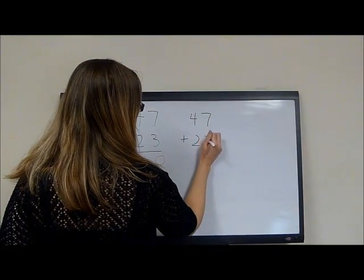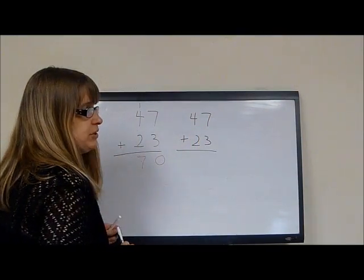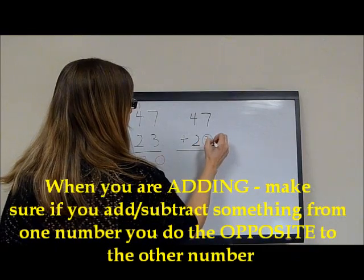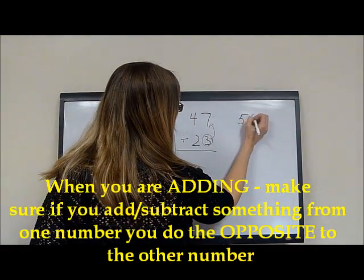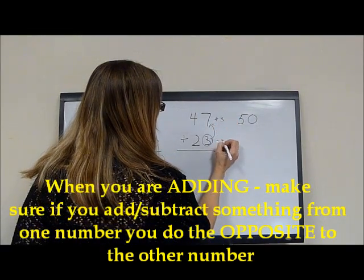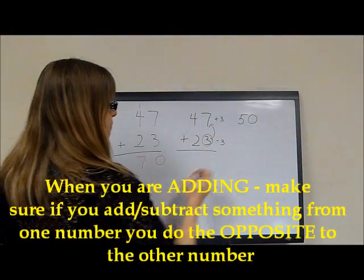Now what they're trying to have you do is make friendly numbers. So we're going to rewrite this problem for your kids. And this is how they're supposed to be doing it. They're supposed to see that if you take this 3 and add it up to there, we're going to make 50.